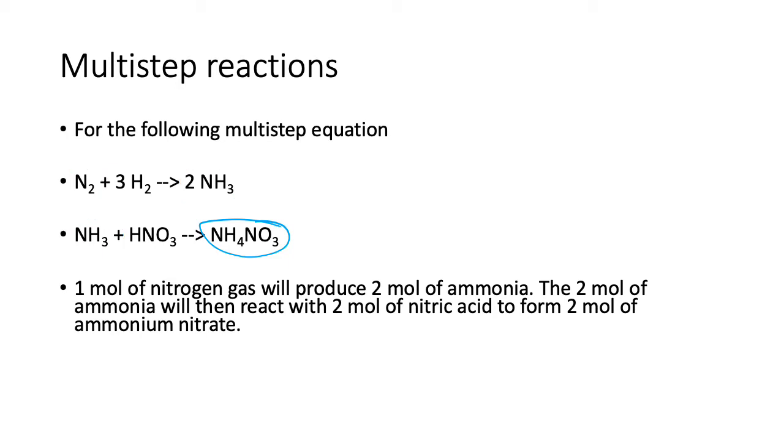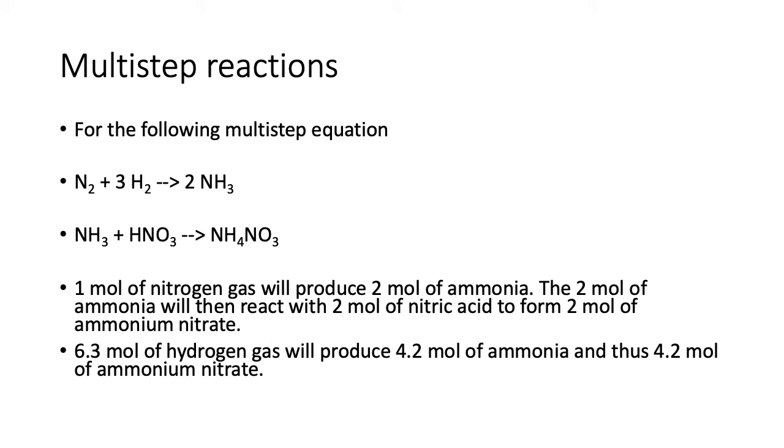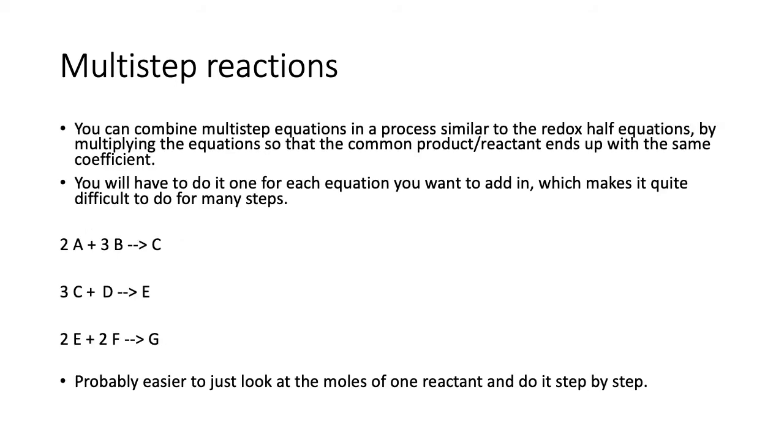So let's have a look at another one. Say you have 6.3 moles of hydrogen gas, will produce 4.2 moles of ammonia, and then the 4.2 moles of ammonia doesn't suddenly halve, it just goes on and produces 4.2 moles of ammonium nitrate. So the idea is that you do not have stoichiometry going down a reaction, going from one reaction to another.